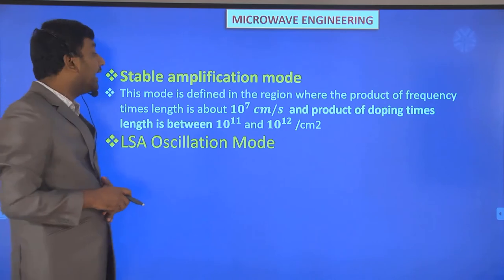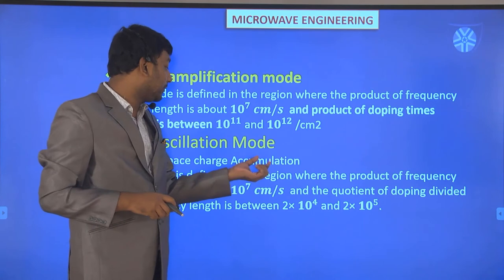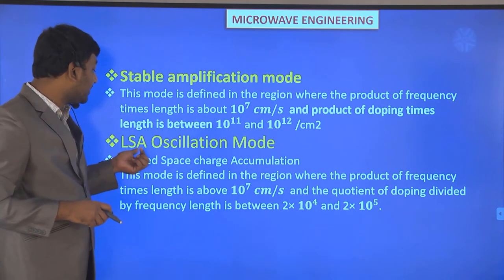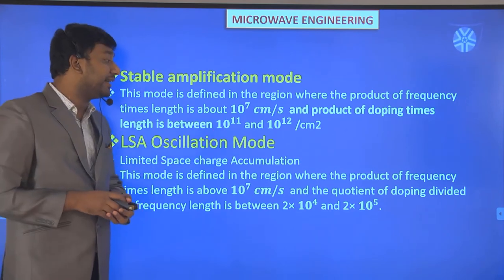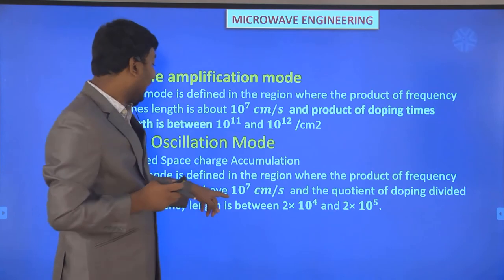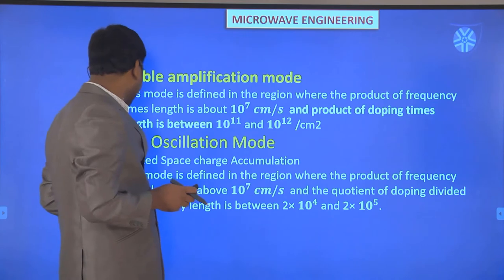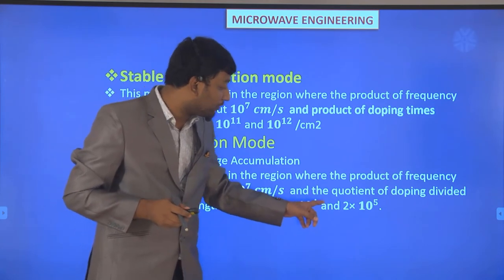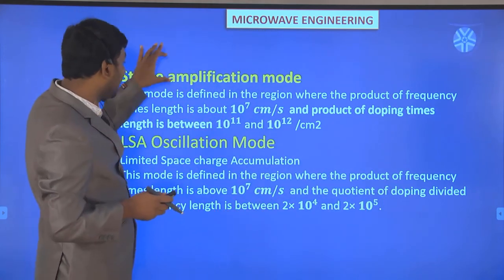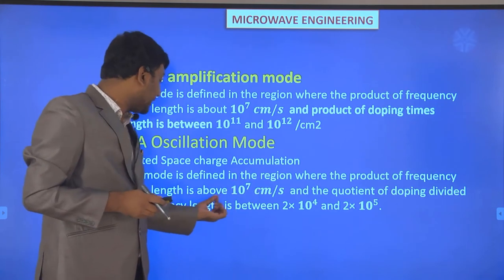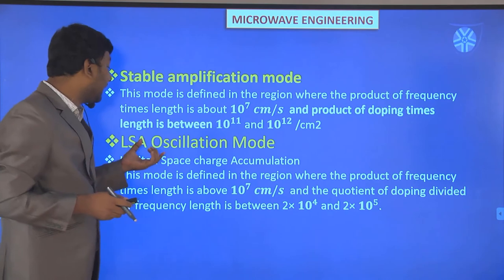The LSA oscillation mode stands for Limited Space-charge Accumulation oscillation mode. This mode is defined in the region where the product of frequency times length is above 10^7 cm/s and the quotient of doping divided by frequency is between 2×10^4 and 2×10^5. The difference between stable amplification mode and LSA oscillation mode is that LSA is above 10^7 whereas stable amplification starts at about 10^7.